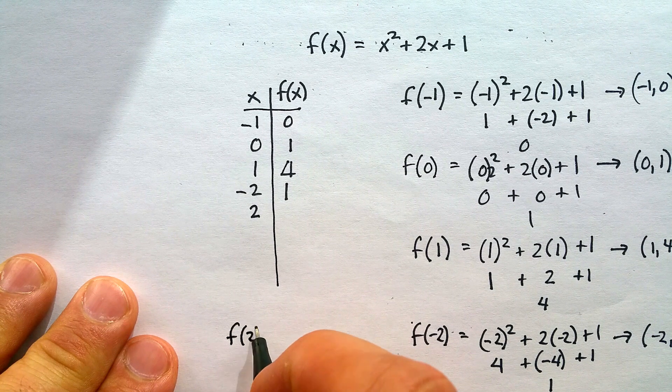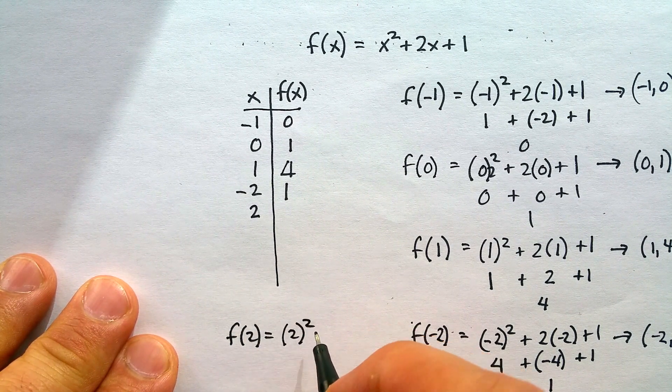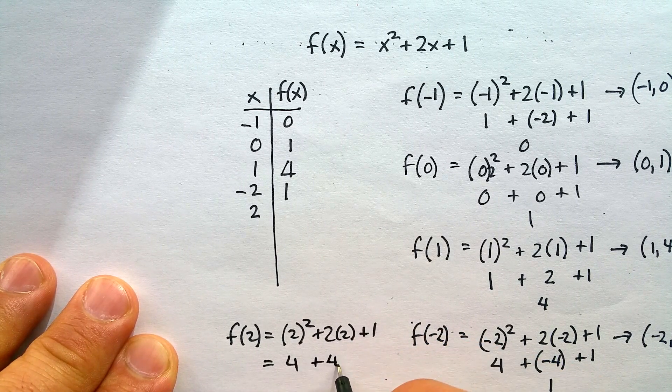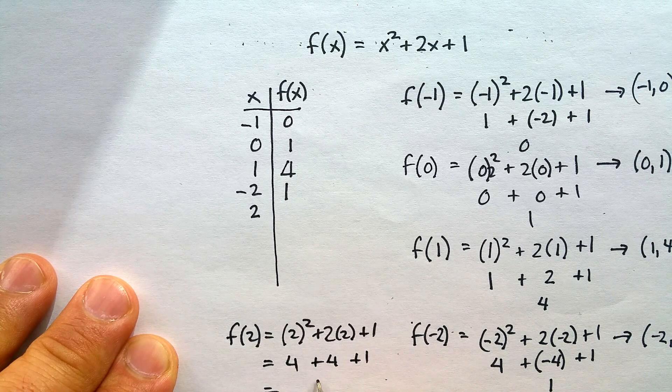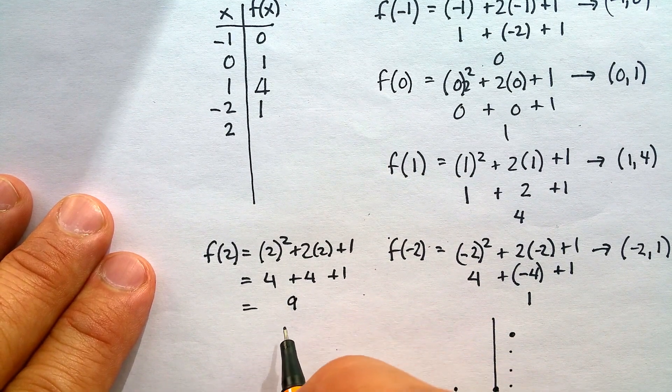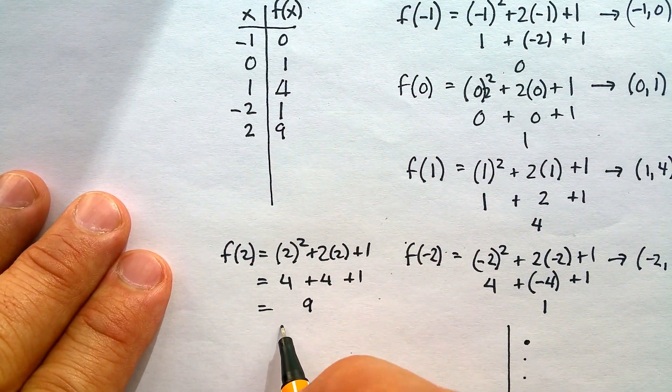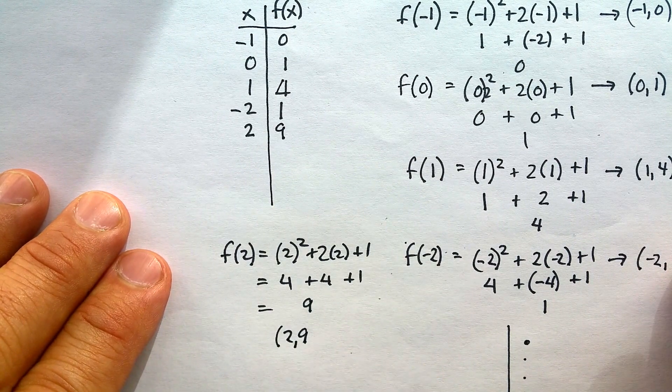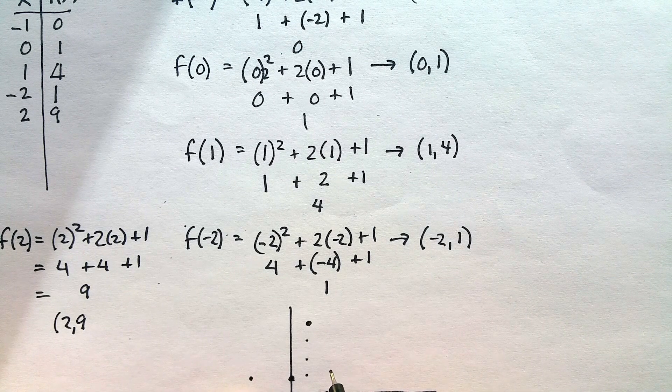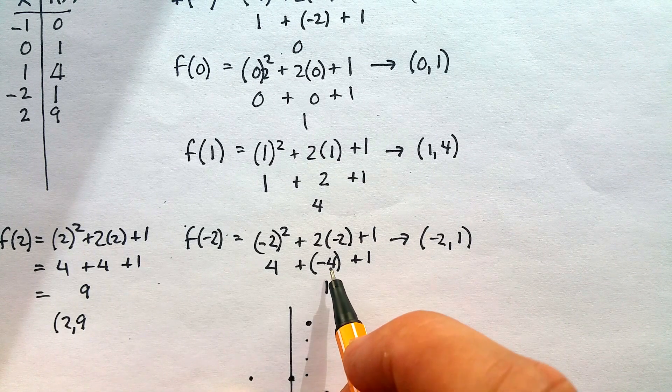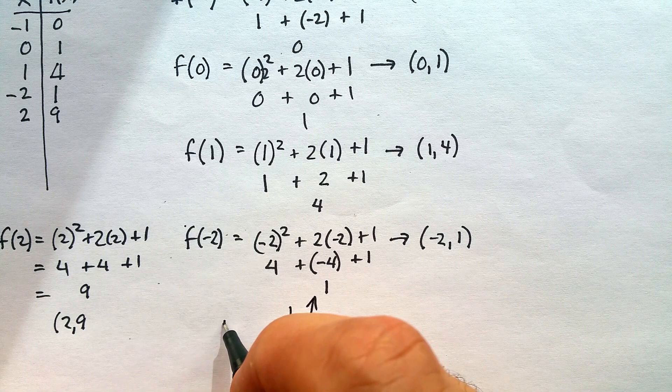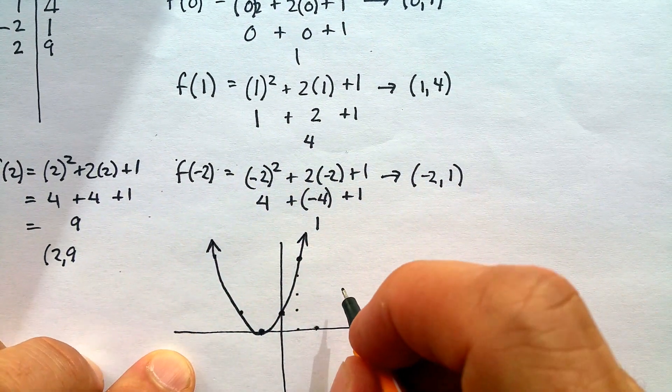f of positive 2 is equal to 2 squared plus 2 times 2 plus 1. It's going to give me 4 plus 4 plus 1. And then my output is going to be 9. My coordinate is, therefore, 2 and 9. So over 2, 1, 2, 1, 2, 3, 4, 5, 6, 7, 8, 9. Here's going to be the shape. You're going to get what's called a parabola.